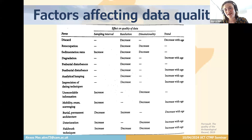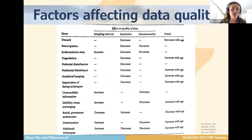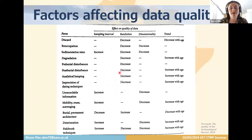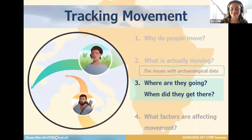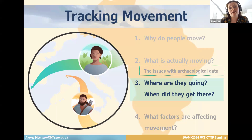Here is a summary table of the various forces which affect different aspects of the quality of archaeological data — for example, analytical lumping has the effect of decreasing the resolution of the data. Some of these factors are very difficult to account for; some we can mathematically quantify. Employing statistical methods to quantify and account for these uncertainties in the data is part of what I work on. Progressing now to the question I've been working on for the last few months: where are they going and when did they get there?